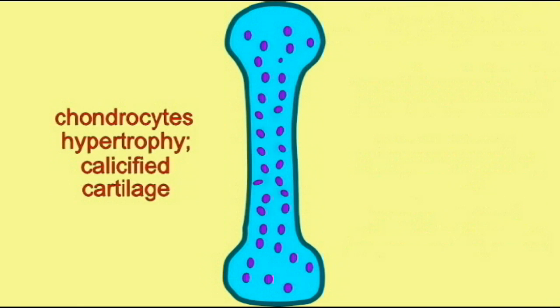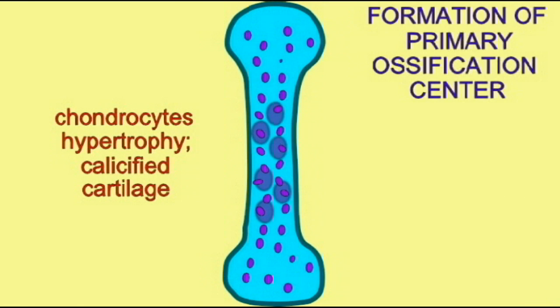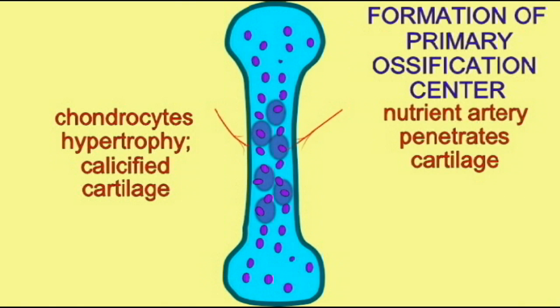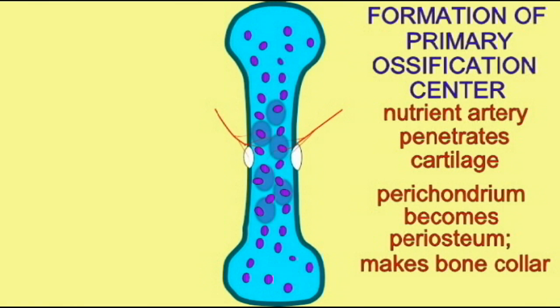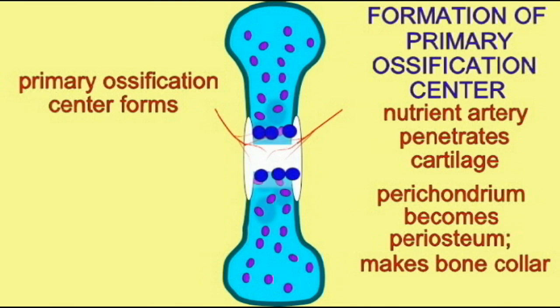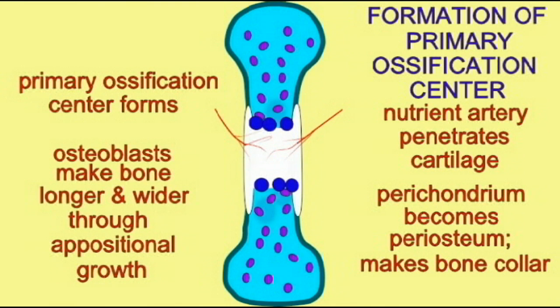Hyaline cartilage is the most abundant cartilage in the human body. It composes the articular cartilages at movable joints. In early embryonic development, it composes most of the skeleton, which is gradually replaced through endochondral ossification.